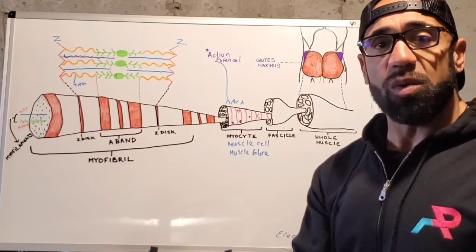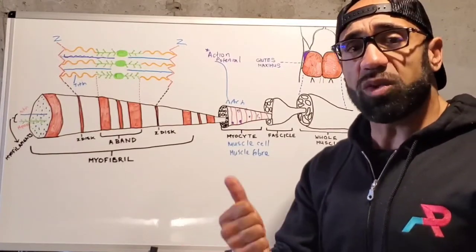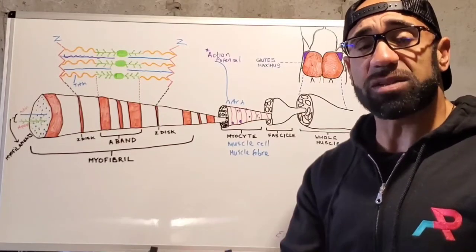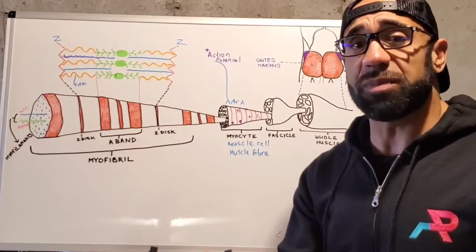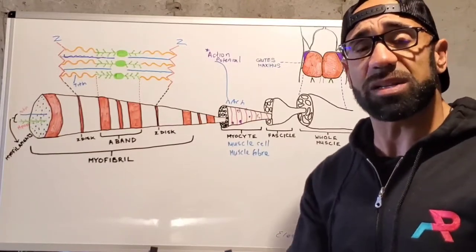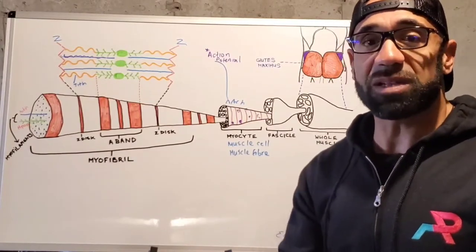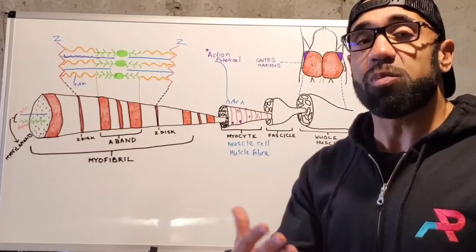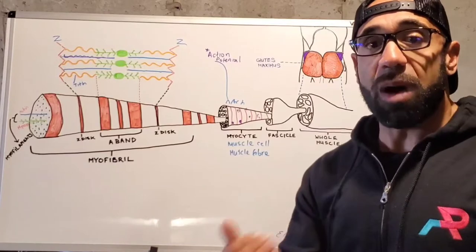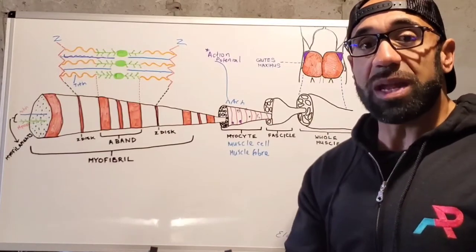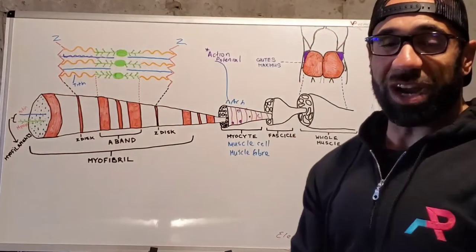Before we get going, there are a couple of terms I'm going to reference. Number one is 'sarco' and number two is 'myo.' Sarco is Greek for muscle, and myo is Latin for muscle. I might reference the sarcoplasmic reticulum — the endoplasmic reticulum for skeletal muscle — the sarcolemma, which is the plasma membrane of skeletal muscle, and the sarcoplasm, which is the cytoplasm of skeletal muscle. When it comes to myo, we've got a myocyte, a myofibril, and myofilaments — the contractile proteins that allow muscle contraction to occur.